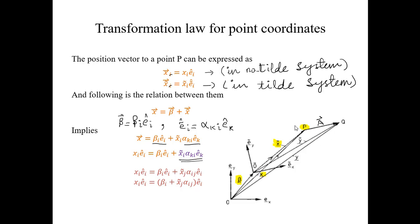So here you have a position vector with respect to both systems. Now, what will relate these two position vectors? X vector is equal to beta vector plus X-tilt vector, as you can see from here. I have highlighted the vectors in sum — X vector is the sum of beta vector plus X-tilt vector.